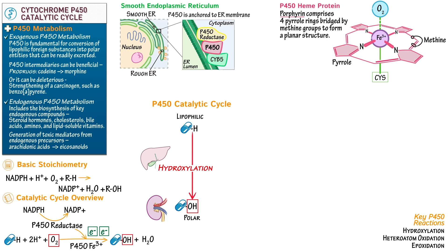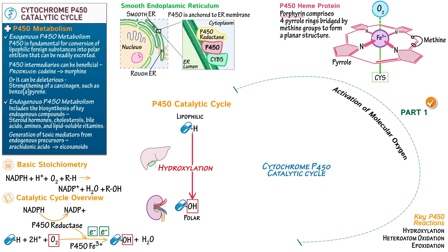The catalytic cycle involves two key parts. Part one is the activation of molecular oxygen, which takes up the bulk of the steps in the cycle — it's basically just preparing oxygen for part two. Part two is the oxidation of the substrate, which is the key and simpler portion of the reaction. We represent the enzyme as P450 bound to ferric iron, Fe³⁺, in its 3-plus oxidation state.